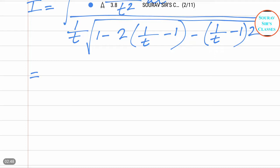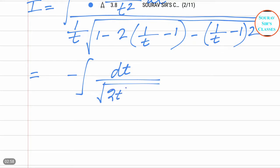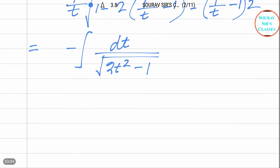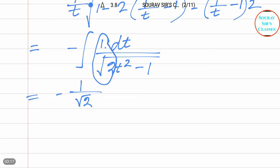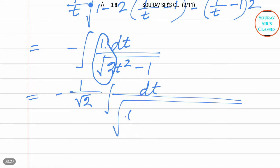This equals to minus integration of dt divided by root over (2t² minus 1). From this we can write minus integration of dt divided by root 2 over t² minus (1 by root 2) squared.